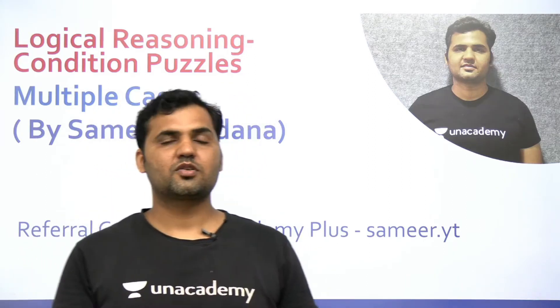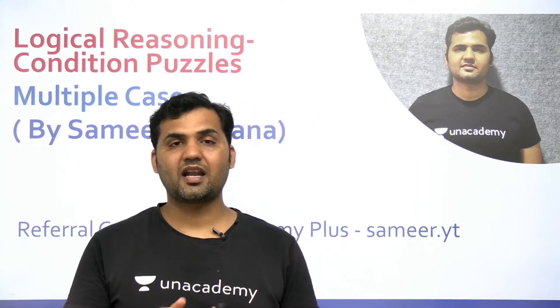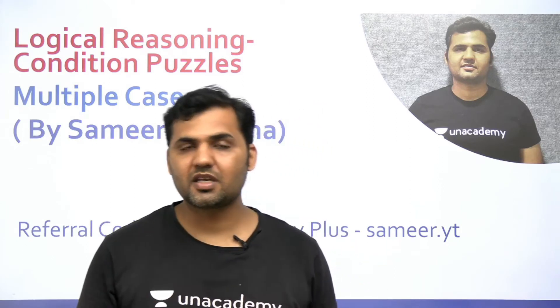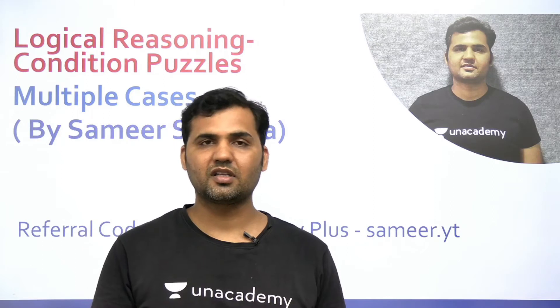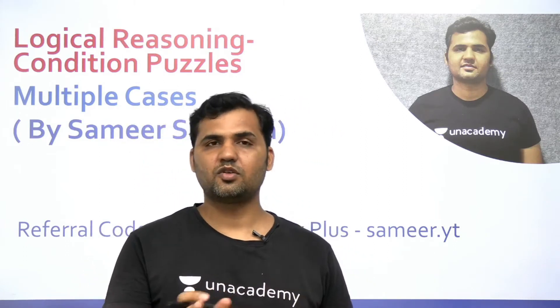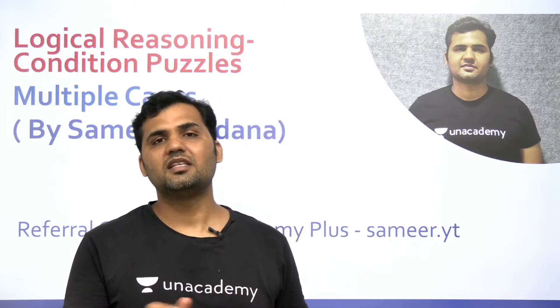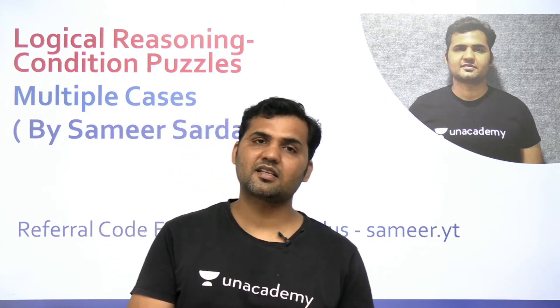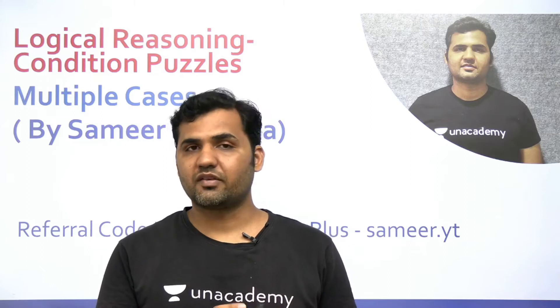In this video we are going to discuss a data arrangement set based on multiple cases — a type that causes students a lot of confusion, often leading to 20–25 minutes wasted on one set. This type of set with multiple cases has been appearing in CAT regularly: 2017, 2018, and 2019. To score 99+ percentile in CAT you need to solve around five sets in 60 minutes — about 12 minutes per set.